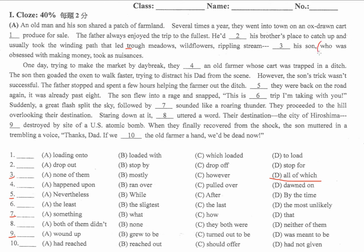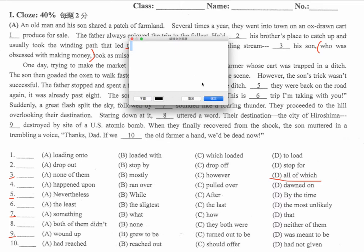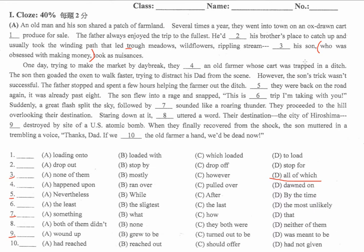这個当然跟後面的句子结构有关。因為後面是 his son who was obsessed with making money，這是形容詞子句。主要句子裡面 his son 是主詞，took 是動詞，所以 took 必須要有受詞。受詞的部分就是這個關係代名詞的部分。